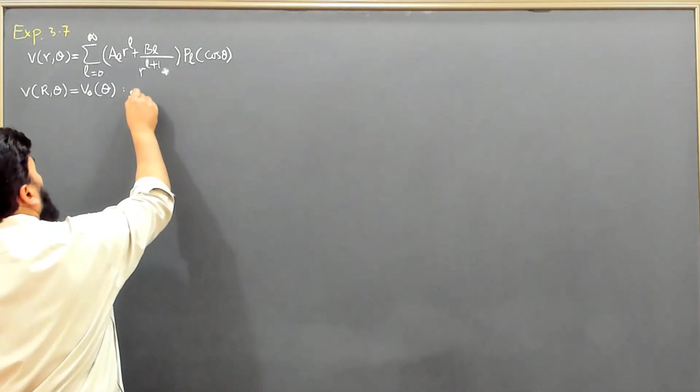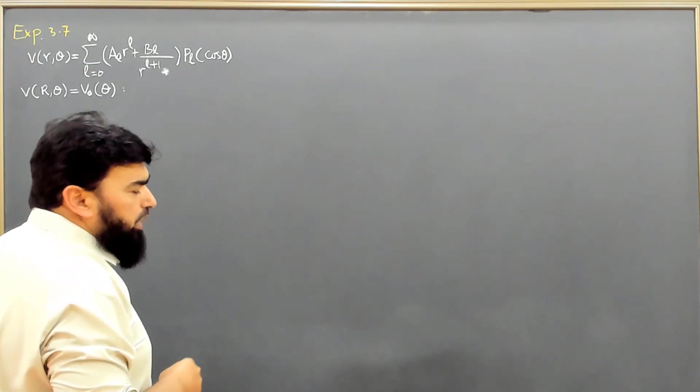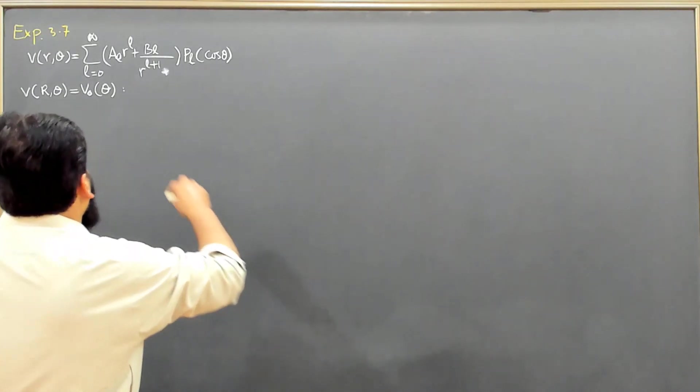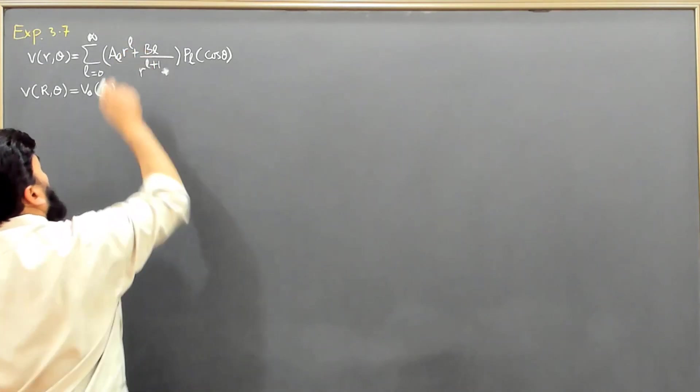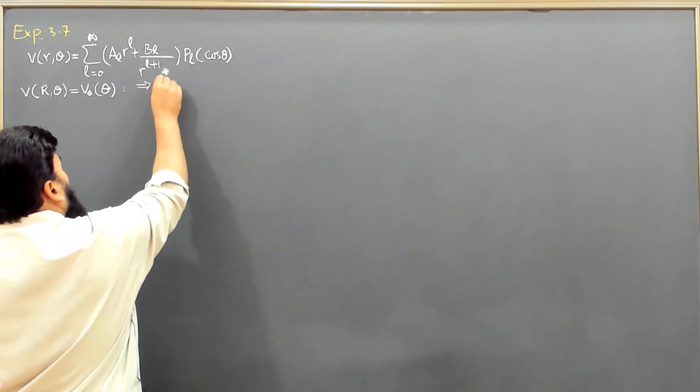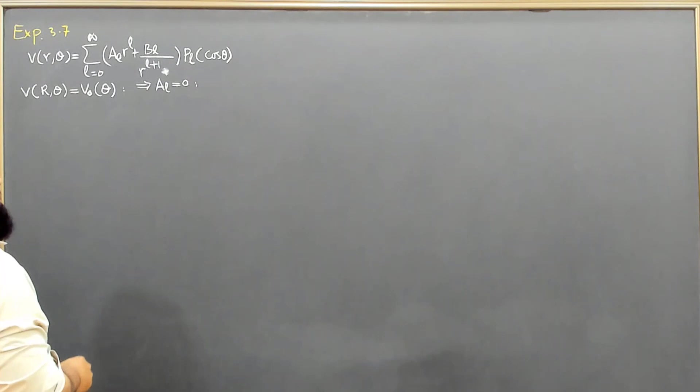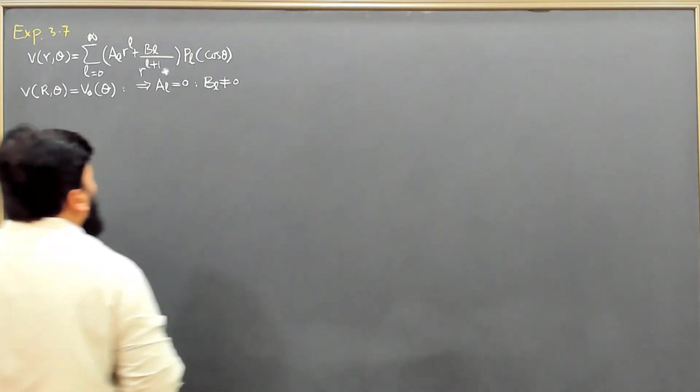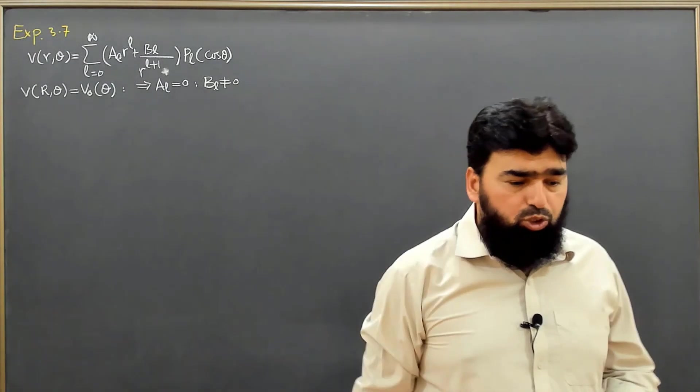When we go outside the sphere, R is increasing, and the potential is supposed to fall down. But if I look at the AL term, it says that when you go outside the sphere the potential is increasing. This implies that AL must be 0, otherwise we will not reflect the right geometry, while BL is non-zero in this case.